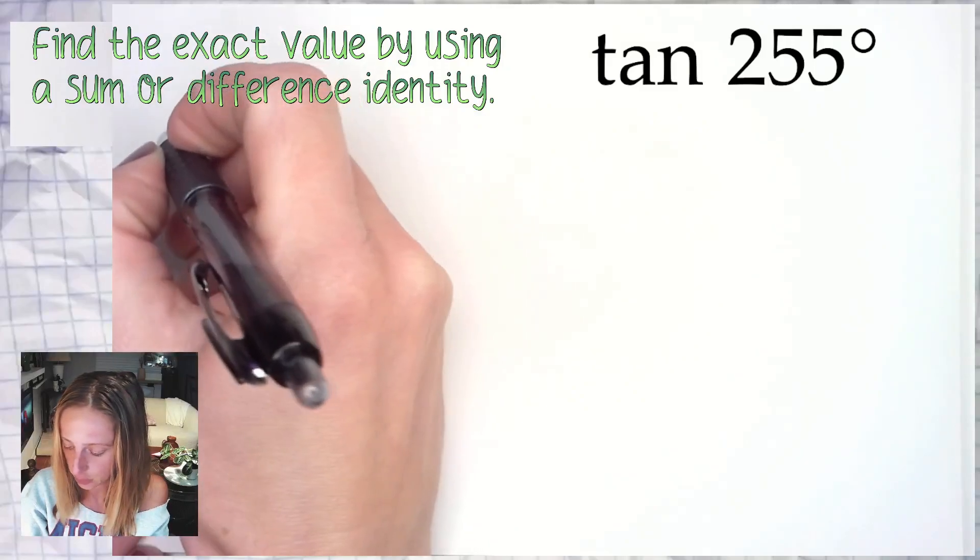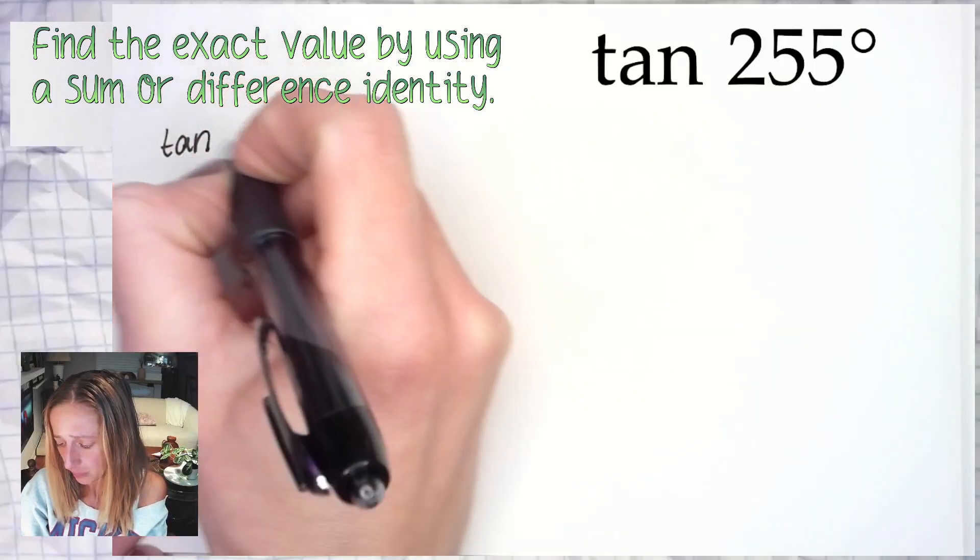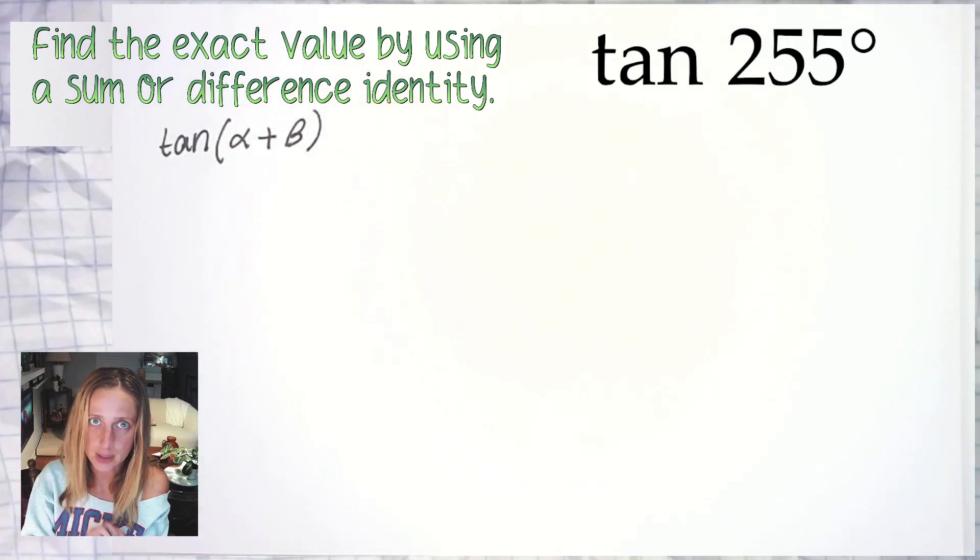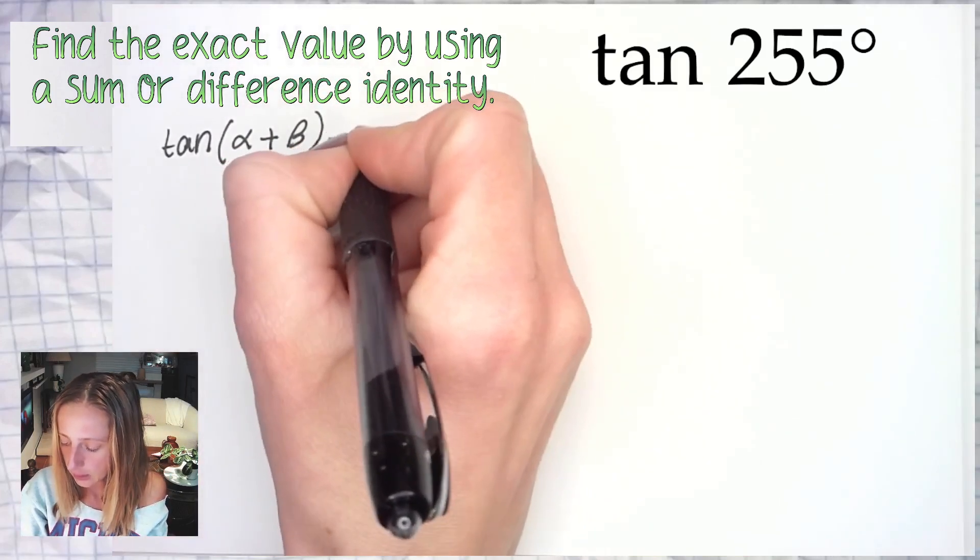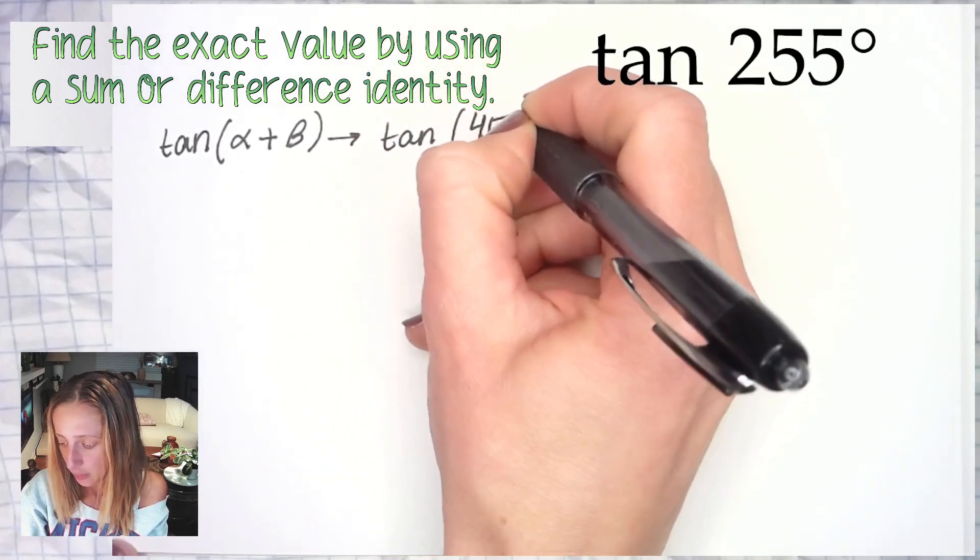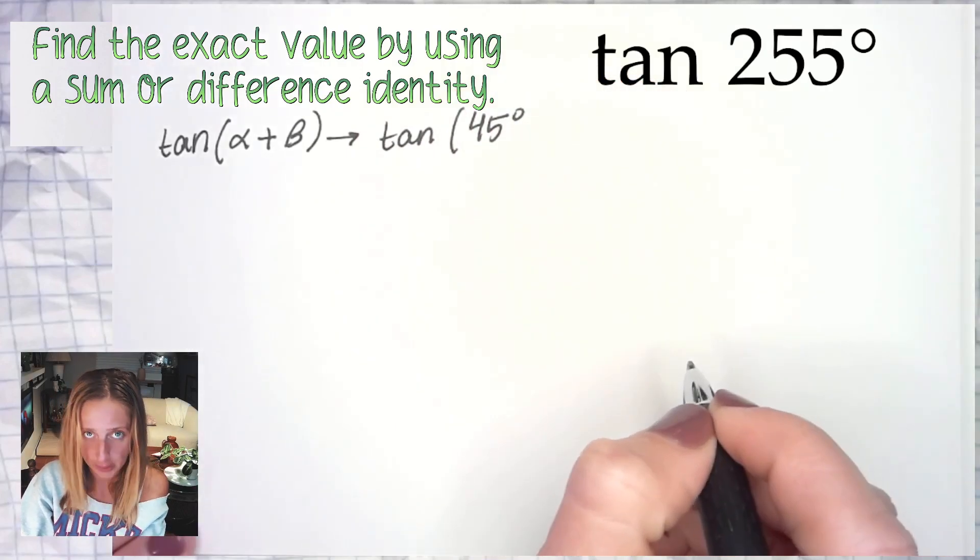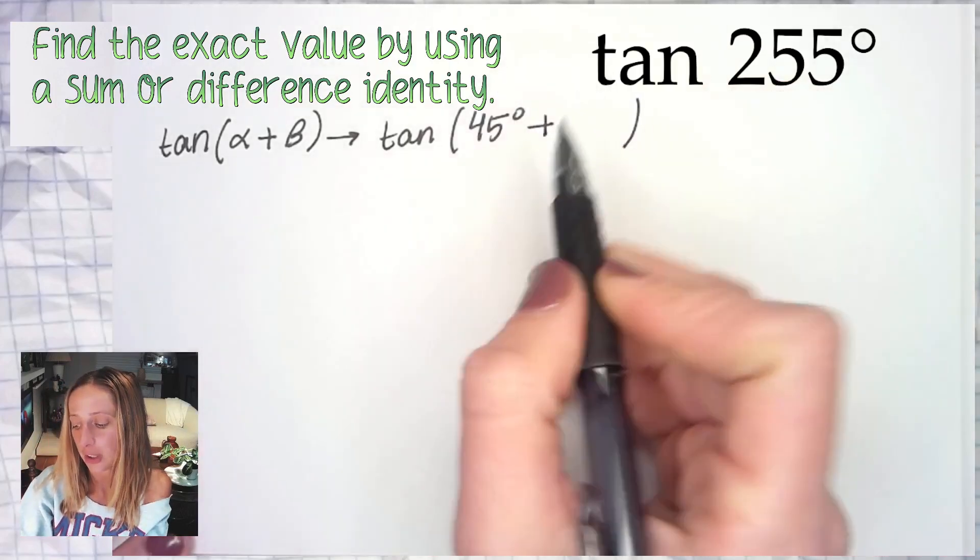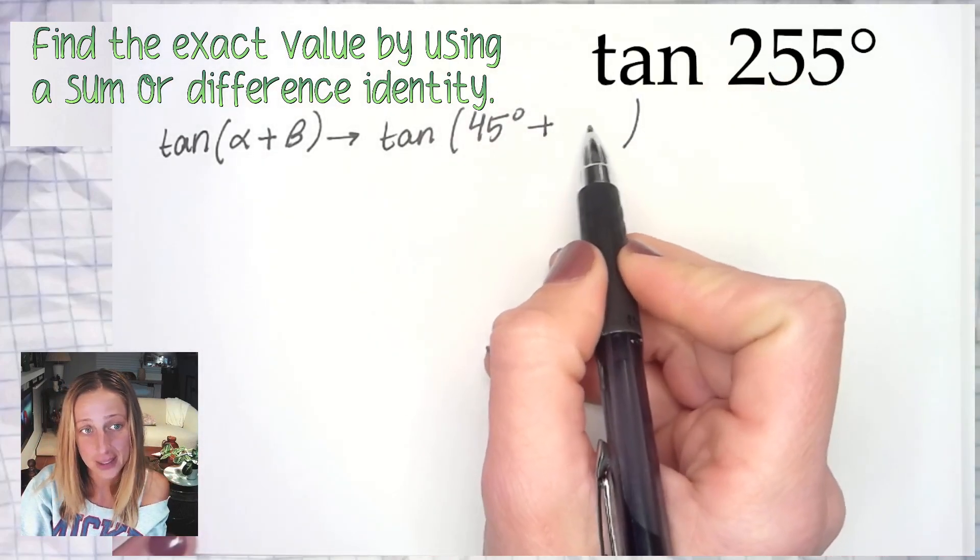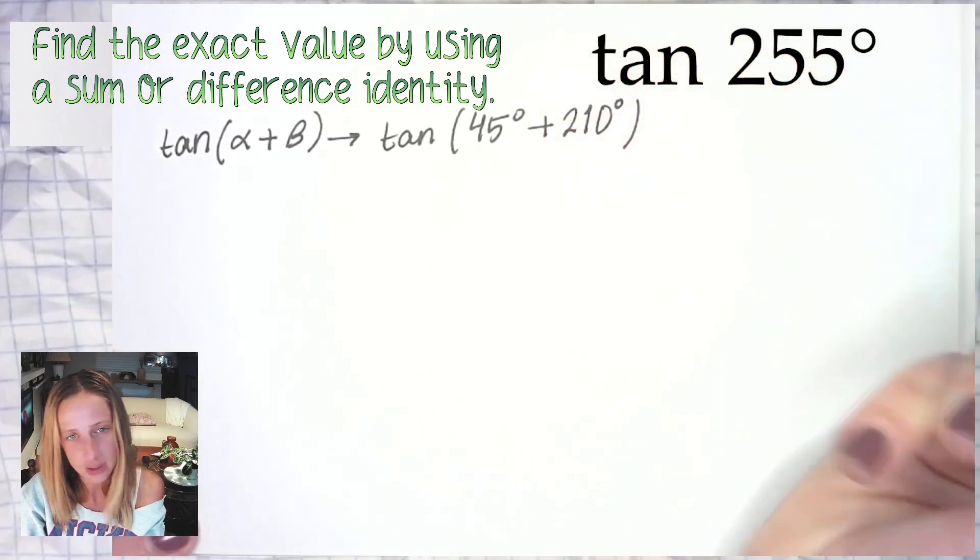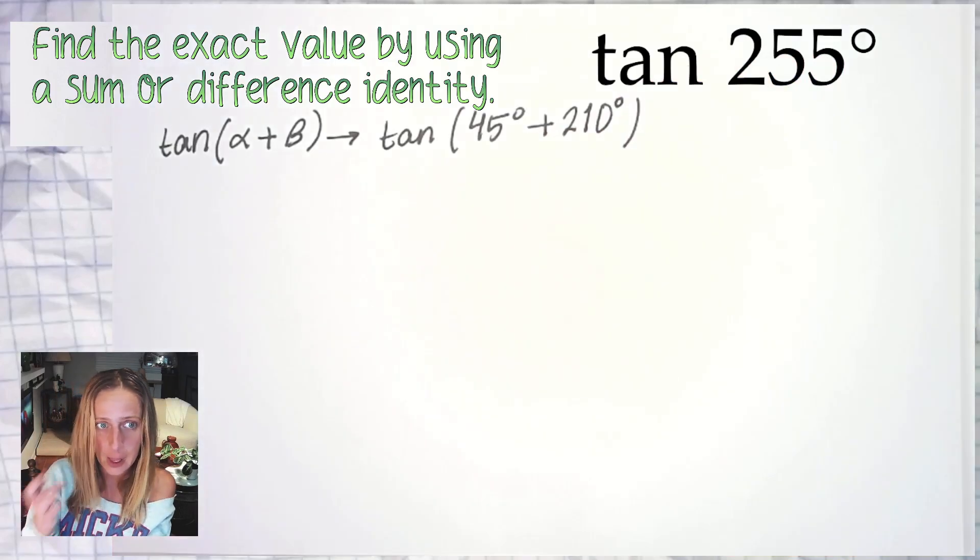So here we have tan of 255 degrees, and I tend to lean into using an angle sum identity. I like to default to one of my angles, usually alpha, being either 45 degrees or π/4 radians. From there I will use my brain to figure out what angle I need to add to 45 to get 255 degrees. Hopefully everyone here is able to tell that the beta for this situation will be 210 degrees.